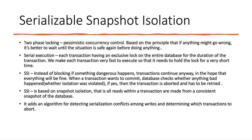Now let's understand serializable snapshot isolation (SSI). In this chapter we have seen concurrency controls like two-phase locking, which does not provide good performance, and serial execution, which does not scale well. We have also seen weak isolation levels that allow race conditions like lost updates, write skews, and phantoms. To overcome all these problems, serializable snapshot isolation has been very promising — it provides full serializability but with only a small performance penalty compared to snapshot isolation.